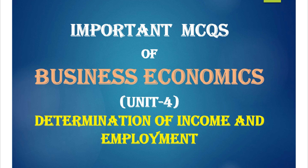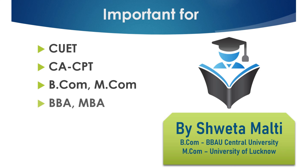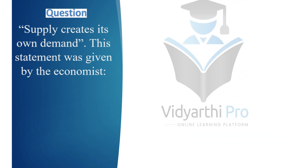The units already covered are: chapter number one, Introduction in Microeconomics; chapter number two, Consumer Behavior and Demand; and chapter number three, National Income and Related Aggregates: Basic Concepts and Measurement. These selected memory recall questions are very important for exams like CUET, CA CPT, BCOM, MCOM, BBA, MBA, Net JRF, UPHESC, UPPSC, and UPSC — mainly for economics domain subjects.